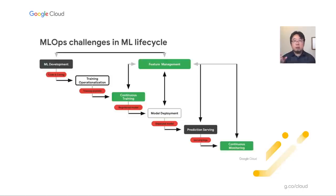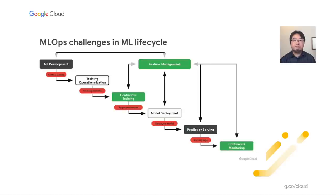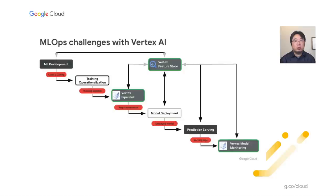There are many different MLOps challenges and lifecycle stages. Vertex AI is designed to solve these problems with different components and services. Today I'd like to look at three different problems: continuous training, feature management, and continuous monitoring. For each problem, we announced new products: Vertex Pipeline, Vertex Feature Store, and Vertex Model Monitoring.